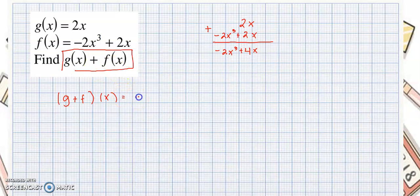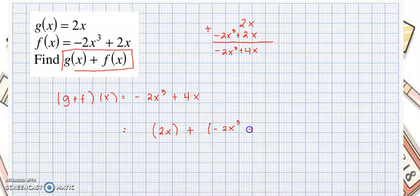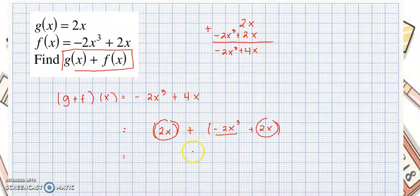So g plus f of x is equal to negative 2x cubed plus 4x. If you would like to add horizontally, you can write 2x plus negative 2x cubed plus 2x, then add the like terms. Like terms should have the same variable and the same exponent. So the result is also negative 2x cubed plus 4x.